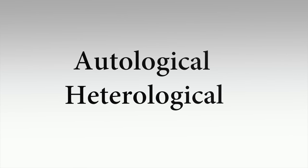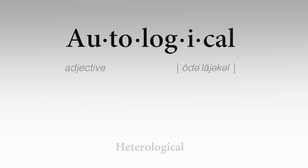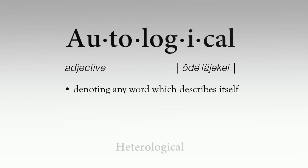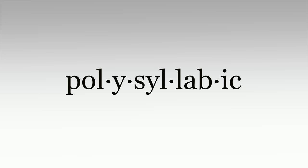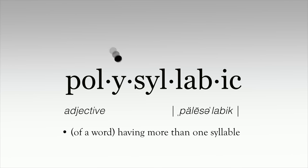This first word, autological, is a term denoting any word that describes itself. So, for instance, the word polysyllabic, itself being a polysyllabic word, can be classified as autological.